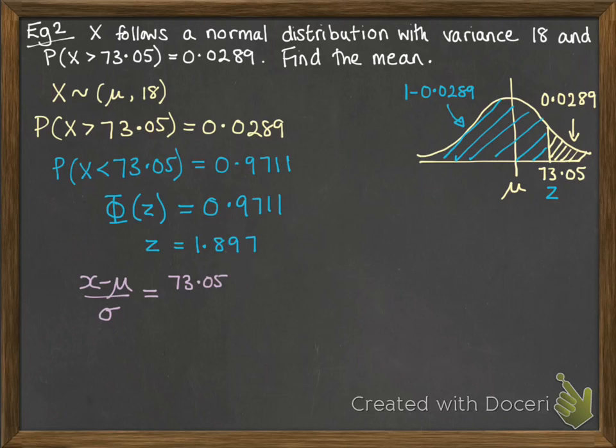Now that has to be equal to x minus the mean over sigma, so we put in our values for x. We don't know the mean but we do know sigma, and that has to equal 1.897. Rearranging that gives us mu is 65.0.